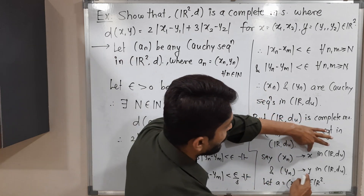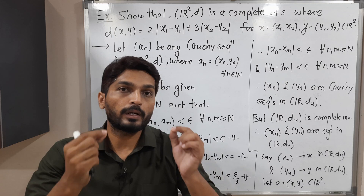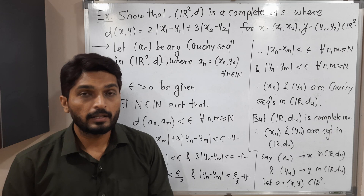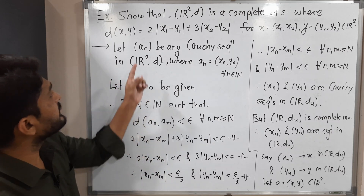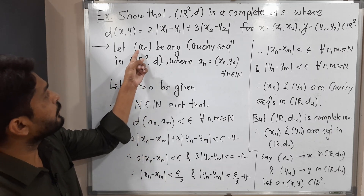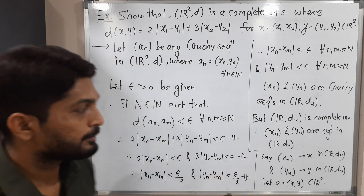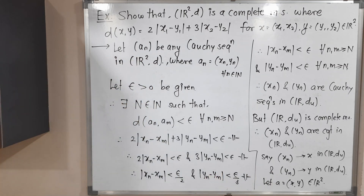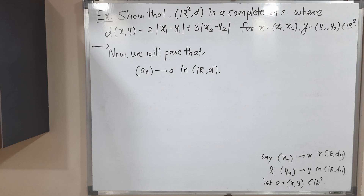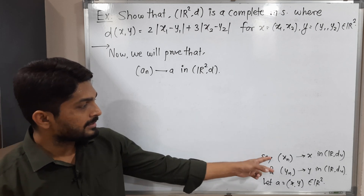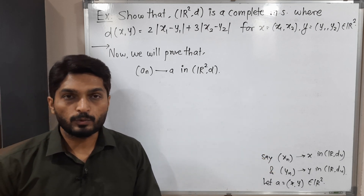Since {xₙ} converges to X and {yₙ} converges to Y, we have two real numbers. With the help of them, I am defining one element of ℝ²: let A = (X, Y). So A is an element of ℝ². Our target is now to prove that the original sequence {Nₙ} converges to A in ℝ² with metric D.